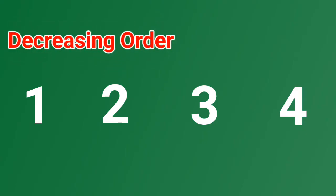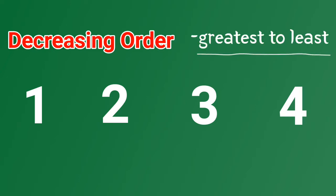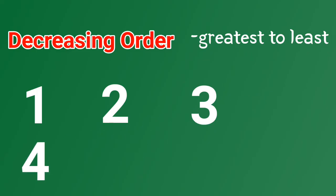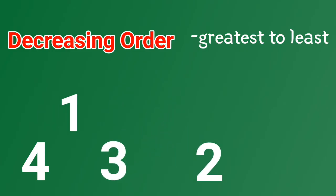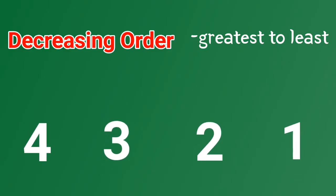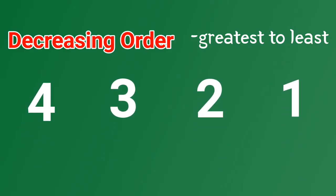Let's say arrange the following in decreasing order, meaning arrange these numbers from greatest to least. In this case, the greatest number is 4, so 4 will come first. This is decreasing order.